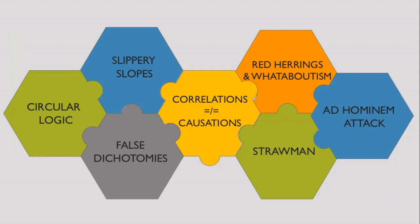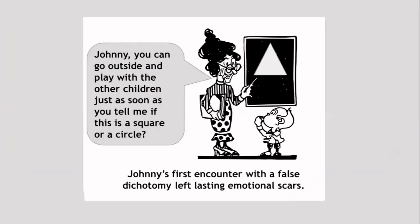The next fallacy is false dichotomy. A false dichotomy basically refers to when the only two options presented to you are both wrong, or when there should have been a third middle-ground option, or when the two options presented are not mutually exclusive and can happen at the same time.